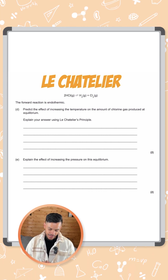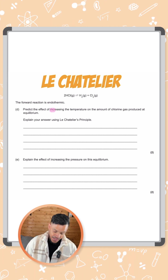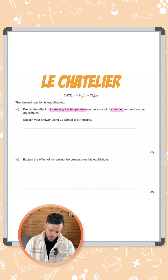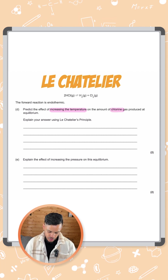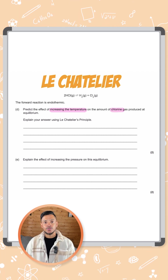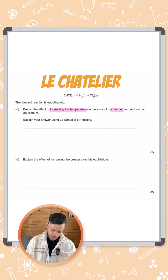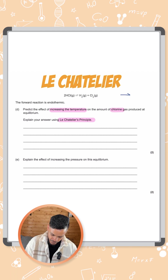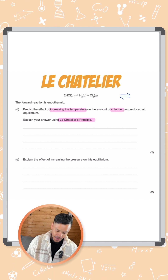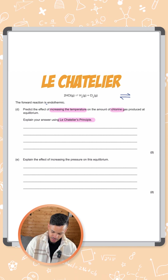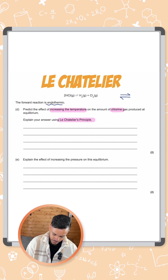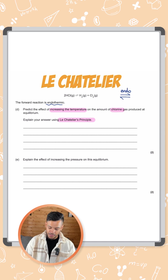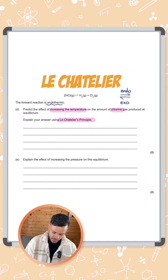The question asks us to predict the effect of increasing the temperature on the amount of chlorine gas produced at equilibrium, using Le Chatelier's principle. If the forward reaction is endothermic, it automatically means the backward reaction must be exothermic.